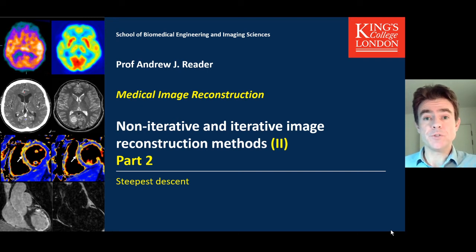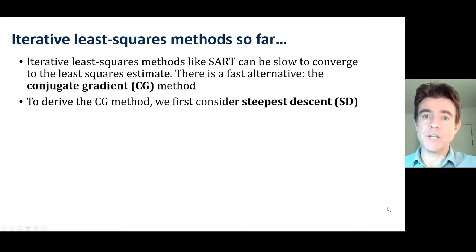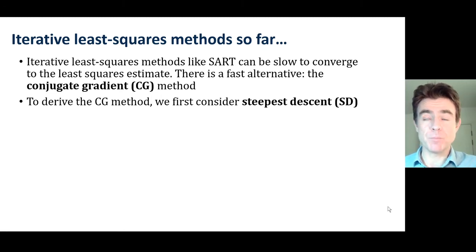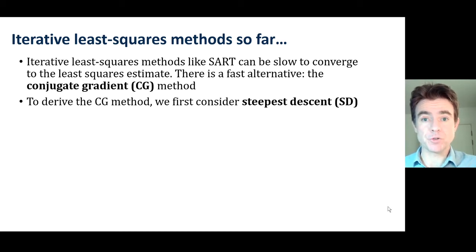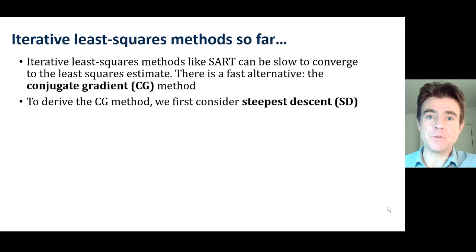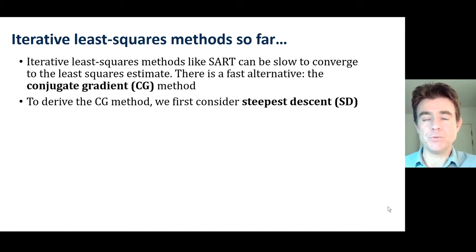In this video, I will cover the steepest descent algorithm. Up to now, we've looked at iterative least squares methods such as the simultaneous algebraic reconstruction technique. These methods are quite robust, but they can be slow to converge. That's why we're going to look at the faster alternative in a later video — the conjugate gradient method. But before that, we're going to consider a simpler algorithm that optimizes the step size of the gradient when you do the update.